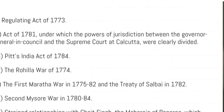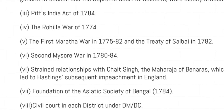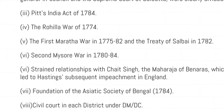The Regulating Act of 1773 was passed after Warren Hastings became the first Governor General of Bengal. The Act of 1773 established the Supreme Court at Kolkata, but there were power overlaps between the council and the court, so the Act of 1781 addressed those issues. Then the Act of 1784 plugged the remaining loopholes of the 1773 Act. Meanwhile, the Rohilla War happened in 1774, and the First Maratha War from 1775 to 1782.